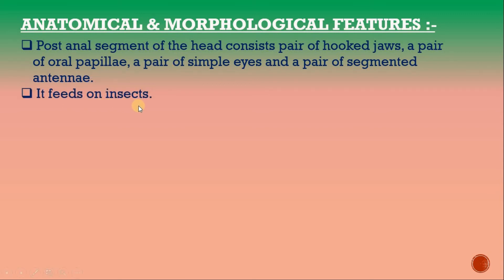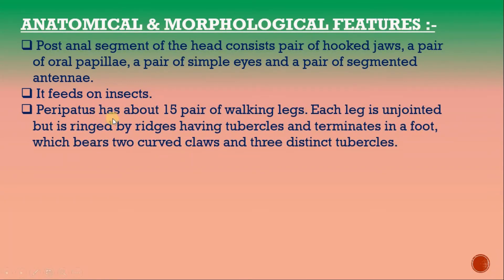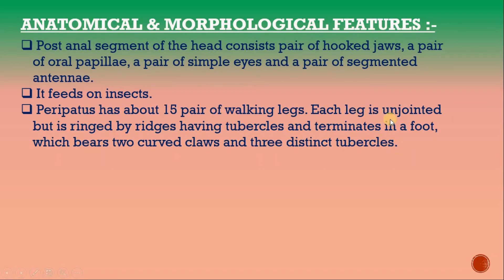Peripatus feeds on insects. It has about 15 pairs of walking legs. Each leg is unjointed but is ringed, bearing tubercles, and terminates in a foot which bears two curved claws and three distinct tubercles.